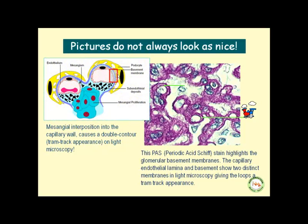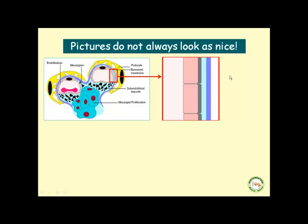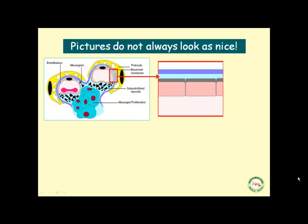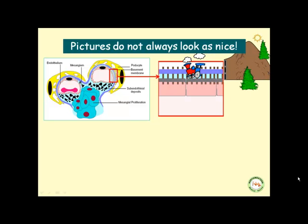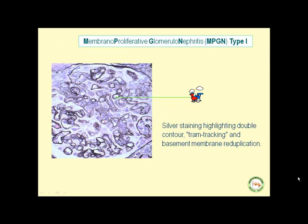To better see this in our own diagram, let us enlarge this segment of the glomerulus. From right to left, you will see the epithelial cells, the thickened laminal layer of the epithelial cells, the mesangium, the thickened lamina of the endothelial cells, and the lumen of the blood vessels. Silver staining highlights the double-contour tram tracking and basement membrane reduplication in MPGN. So two staining methods help highlight the basement membrane: PAS and silver staining.